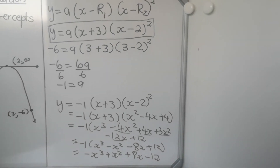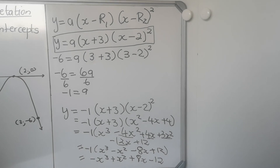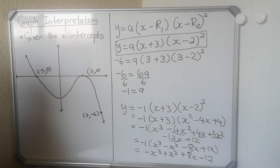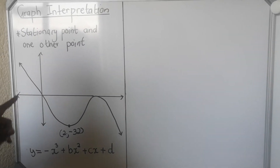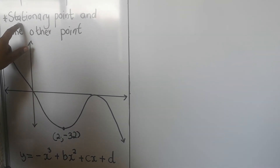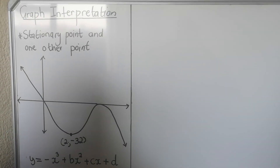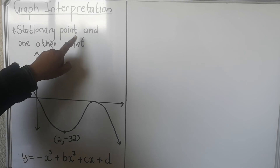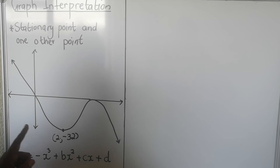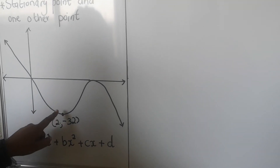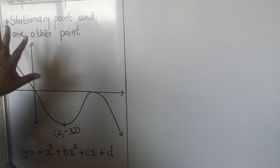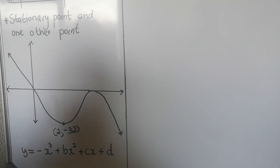Now the third type: when you are not given the intercepts but you are given a stationary point and one other point. What is very important — you can't look at a graph and assume it's a stationary point. You need a statement in the question that tells you that coordinate is a stationary point. If they don't say it's a stationary point, you can't claim it is, even if it looks like one.